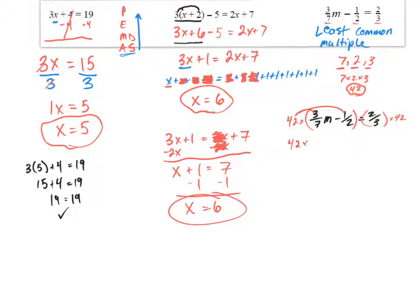If I distribute 42 to everything, I get 42 times 3 sevenths times m minus 42 times 1 half, and that's going to be equal to 2 thirds times 42. Now if you have a calculator, you could just do those operations. 42 divided by 7 is 6, 6 times 3 is 18, so this is going to be 18m. The next problem, I have 42 divided by 2, that gives me 21, and multiply by 1, that's 21. And then finally, I have 42 divided by 3, that's 14, 14 times 2 is 28. Now we are left with an equation that is similar to what we saw earlier. What is nice is we're not dealing with fractions now, and I just used the least common multiple of the denominators to cancel all of the rational numbers, the fractions.